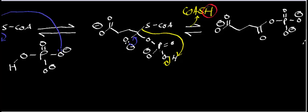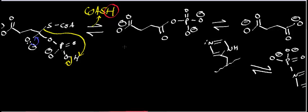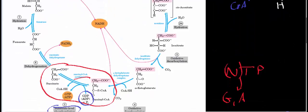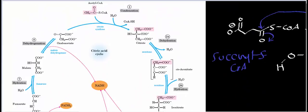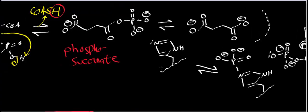In the process, what we get is this molecule called phosphosuccinate. In the next step of the mechanism, this is where we're going to form succinate, which is one of the final products of succinyl-CoA synthetase. Now, one thing we haven't mentioned up to this point is that there's a critical histidine residue in the active site.